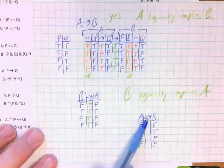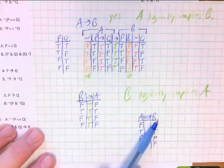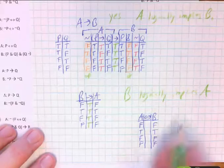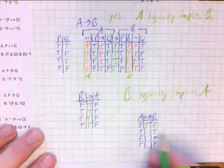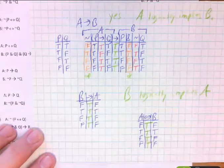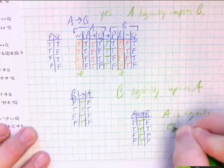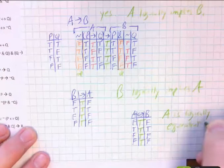And for a biconditional to be true, both truth values of each part have to be the same. So if both of these are false, that makes this true. Both of these are true, that's true. Both are false, true. Both are false, true. And there you go. A is logically equivalent to B.